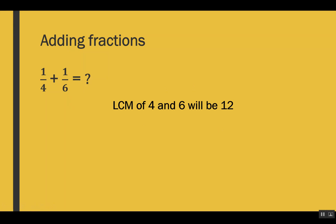The LCM of 4 and 6 is 12. We have to make each denominator equal to 12 by multiplying with some number. Our first fraction is 1/4 — to make 4 into 12, we multiply by 3. Since we multiply the denominator by 3, we must also multiply the numerator by 3, otherwise the value of the fraction changes.